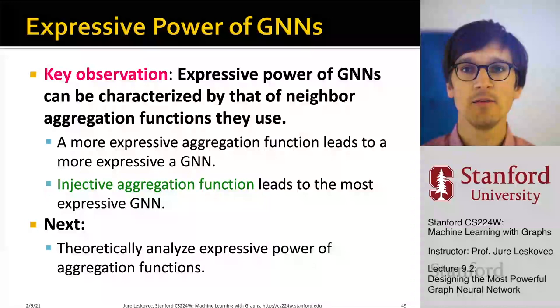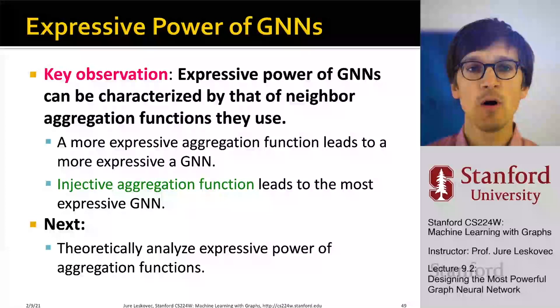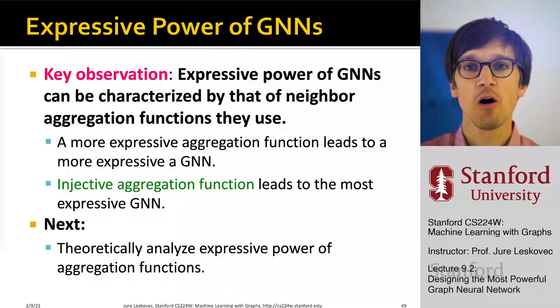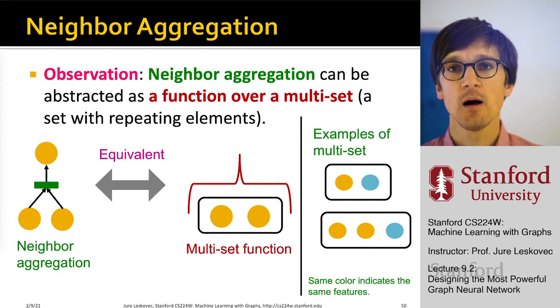Neighborhood aggregation being injective means that whatever the number and features of the children, you map every different combination into a different output — so no information gets lost. Neighborhood aggregation can be abstracted as a function over a multi-set, where we take information from the children and aggregate it.